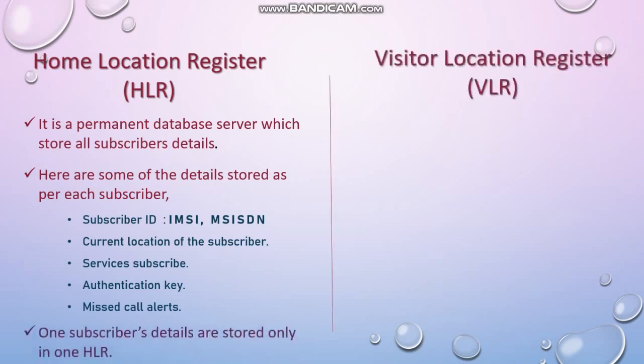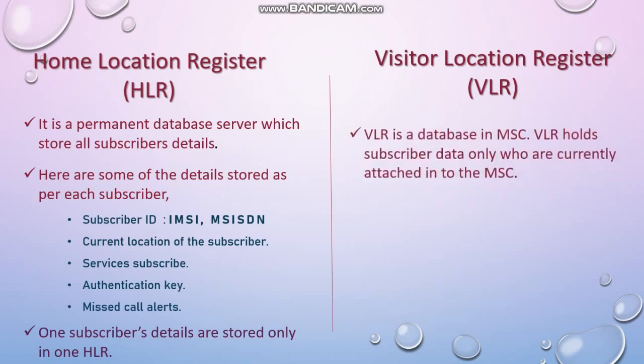Visitor Location Register, VLR, is a database located in the MSC, which is well known as Mobile Switching Center. There will be many MSCs in the network, so each MSC will have one or multiple VLRs. Only the currently attached subscriber details are stored in the VLR — it holds subscriber details temporarily. When you go to another area, your attached MSC may change, so the records from the previous VLR will be erased and the new VLR will be updated.